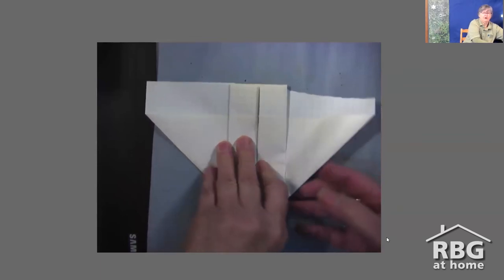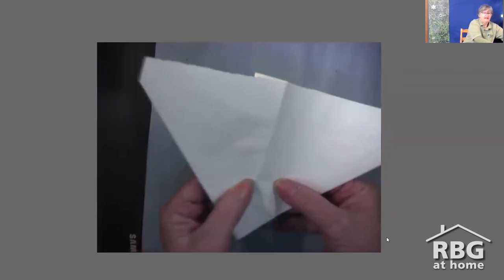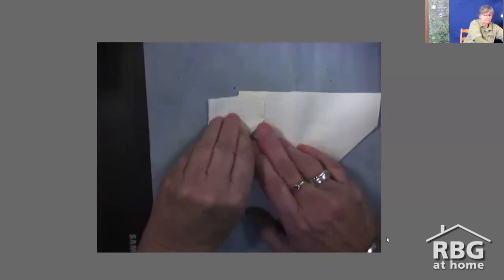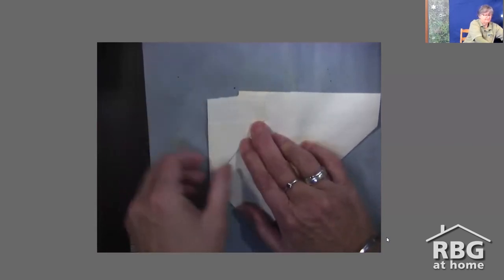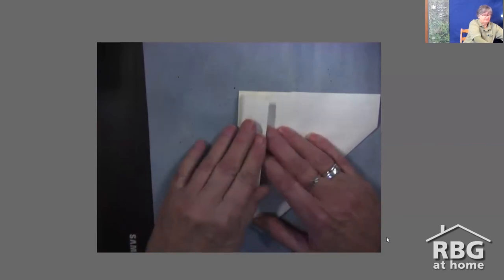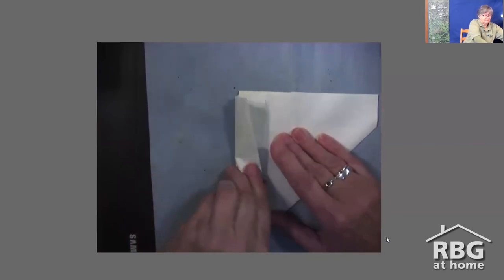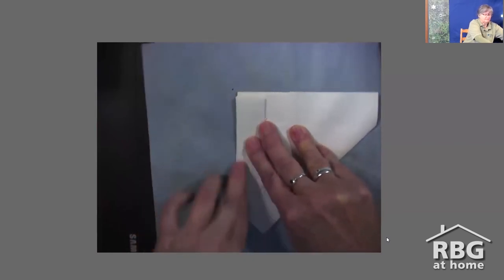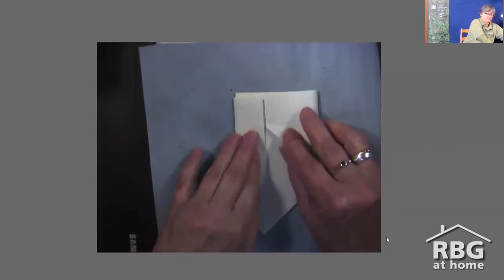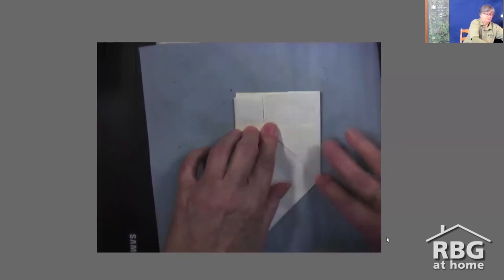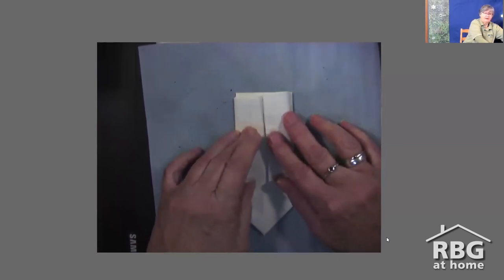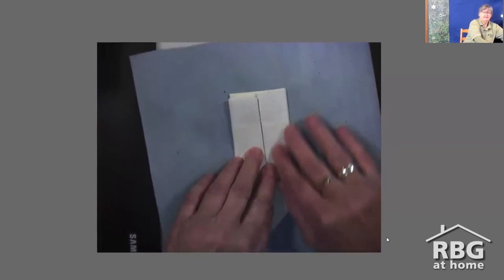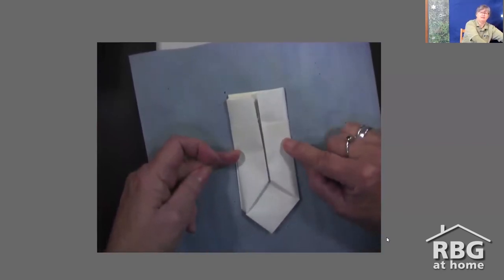Turn your paper over and repeat. There we go, the last piece. You can see this is what your shape looks like now.